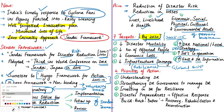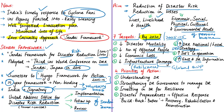Priority one is understanding disaster risk. Disaster risk management should be based on understanding of disaster risk in all its dimensions such as vulnerability, capacity, exposure of persons and exposure of assets, hazard characteristics and the environment. Such knowledge can be used for risk reduction, risk assessment, mitigation, preparedness and response.